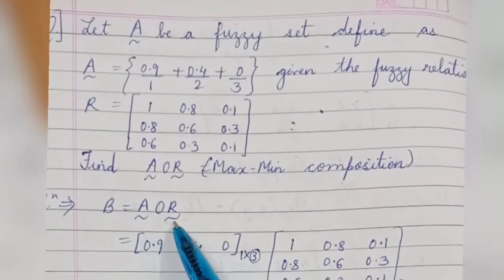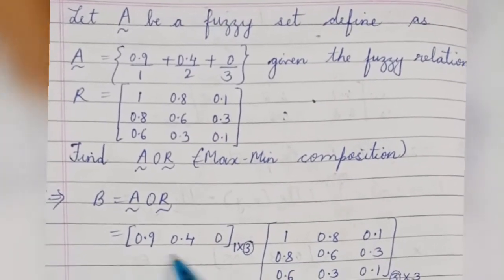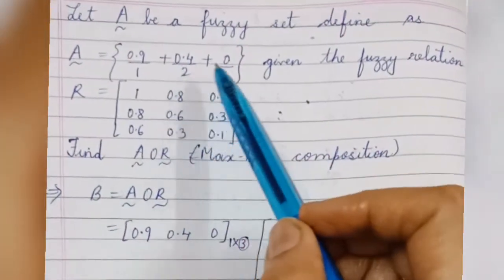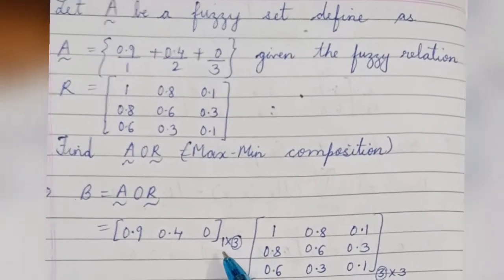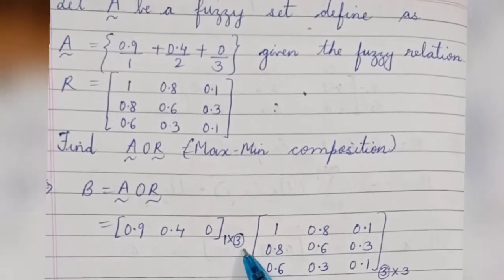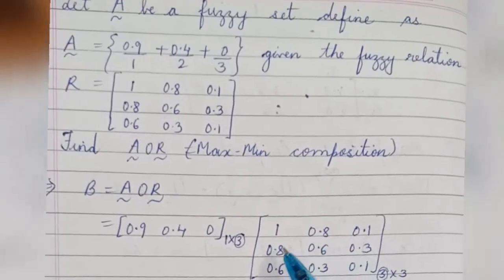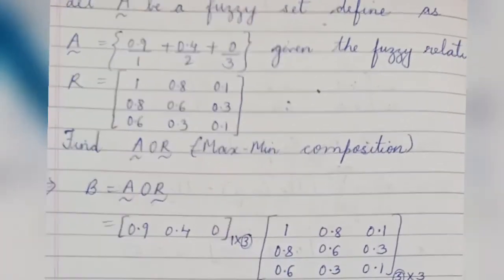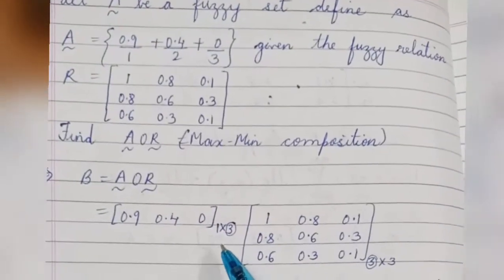Let B equals A composition R. Write fuzzy set A — this is fuzzy set A with three elements: 0.9, 0.4, and 0. The size of fuzzy set A is 1×3. Now write the fuzzy relation matrix of size 3×3.